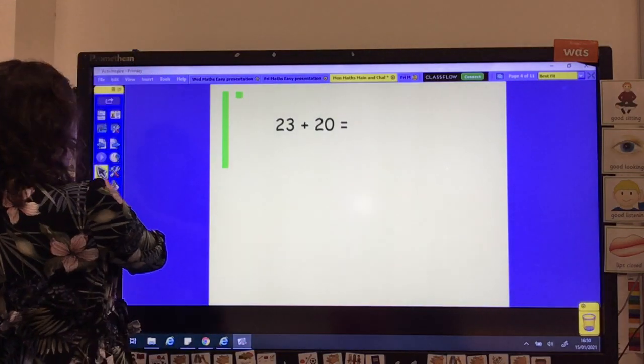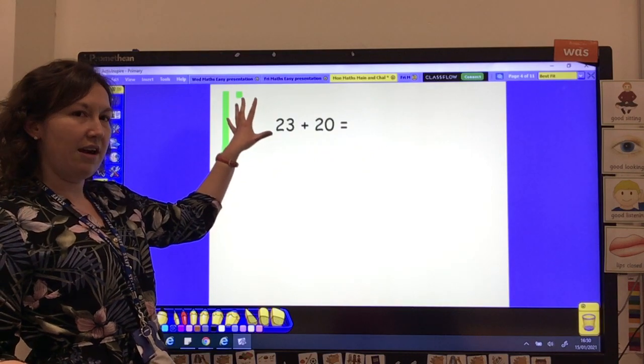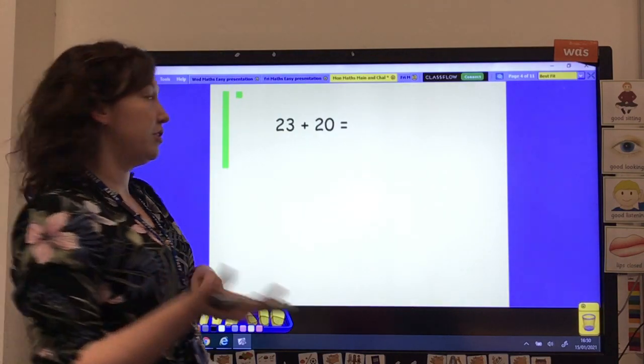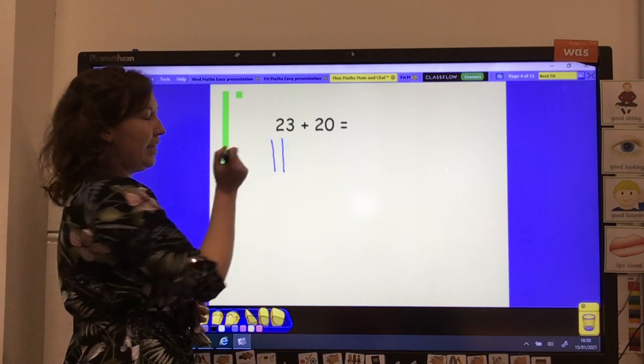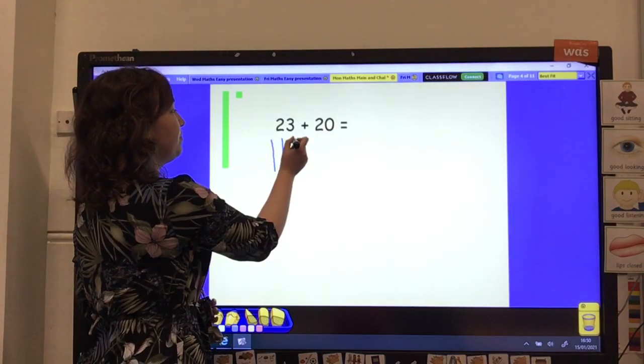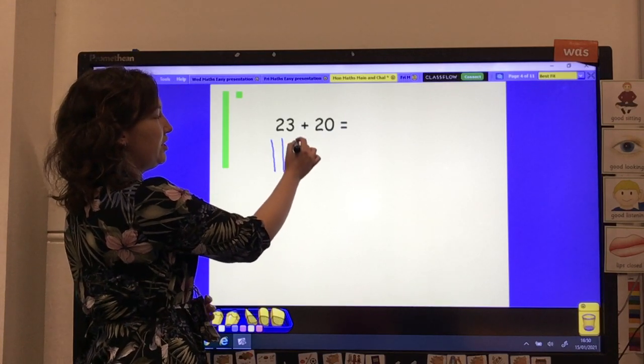Okay, right, I'm going to show you the answer for this one. And rather than using my 10s and 1s that are here, I'm going to show you how you could draw it at home. So 23, 10, 20. So I've done my sticks for my 10s. 1, 2, 3. 10, 20, 21, 22, 23.